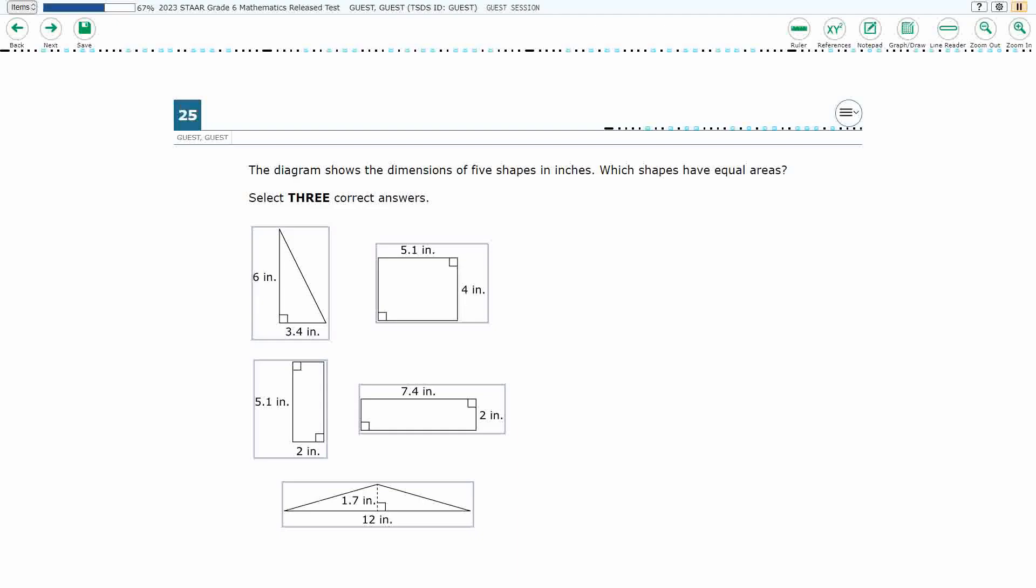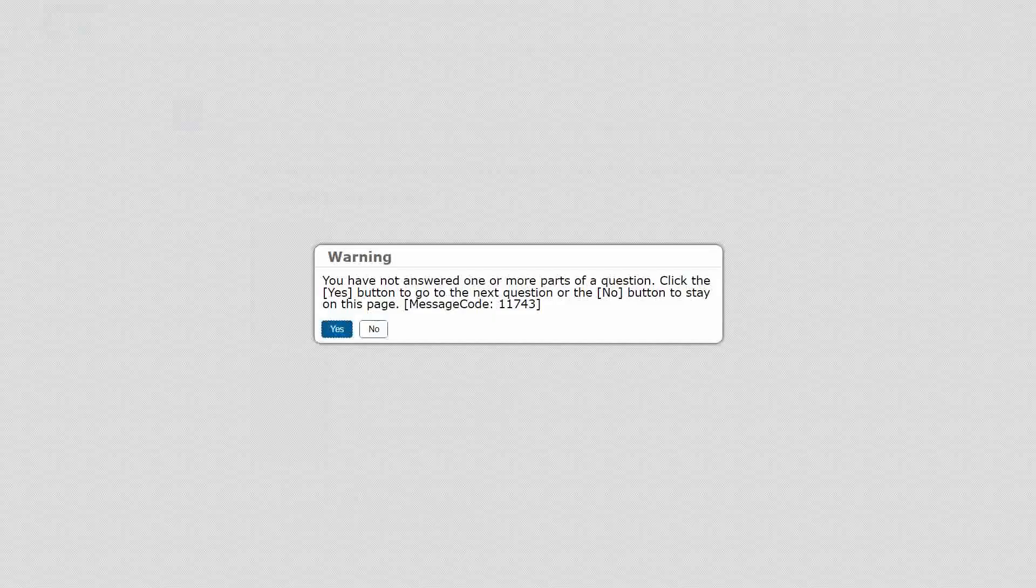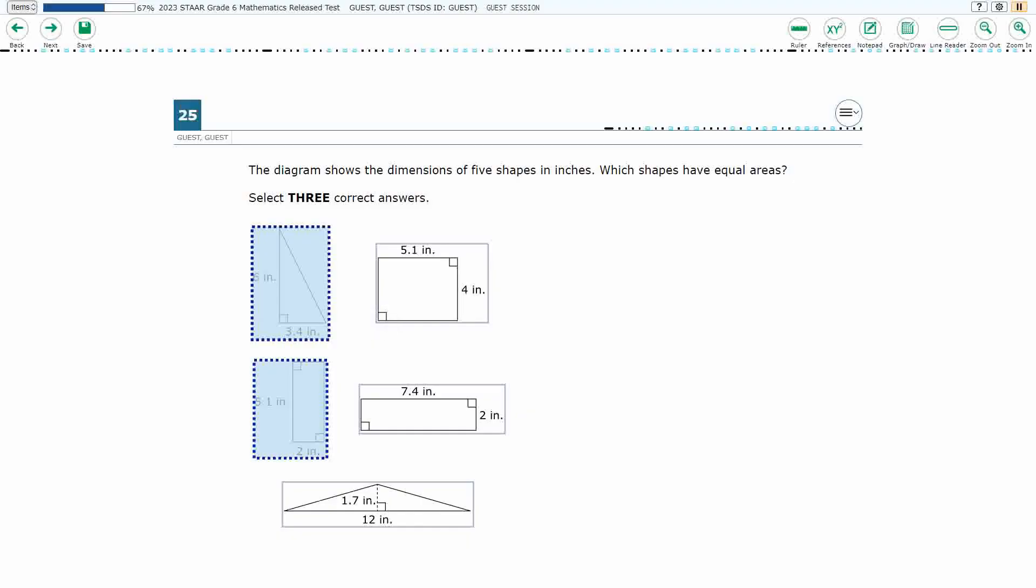So this is hotspot. We need to select three correct answers. If I just try to select two, it is going to give me a warning saying I haven't selected everything, and if I select three, it is impossible for me to select four. So they really want you to select just three.